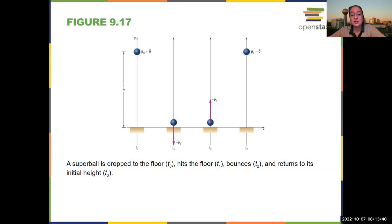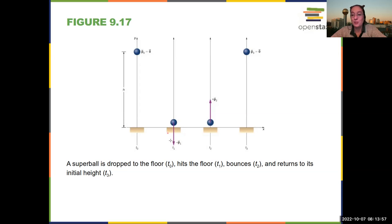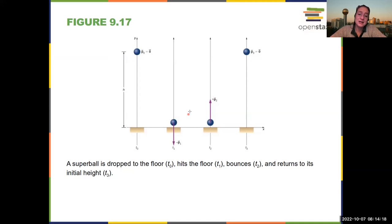A super ball is dropped, hits the floor, bounces off, and returns to its initial height. The ball collides with the floor and gives a tiny bit of momentum to the molecules in the floor, but you don't see the floor move because the force is tiny and the floor is so big. The ball has to get its momentum back from the floor — there's nowhere else to get it. So you define your system as the ball plus the floor.